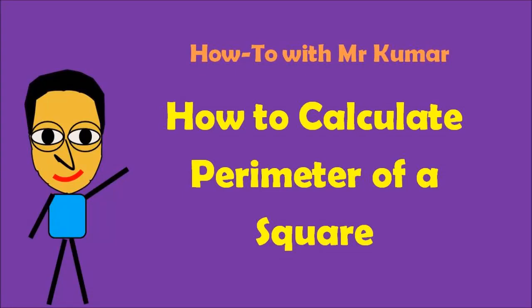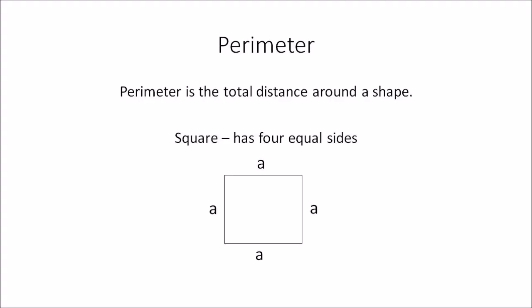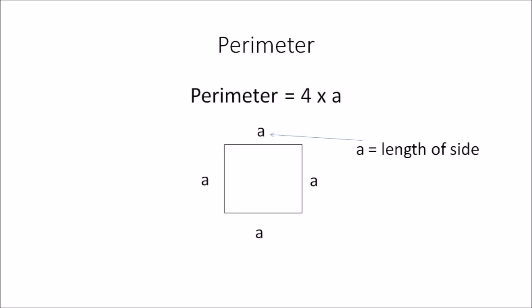Hello everyone. In this video I'll show you how to calculate the perimeter of a square. A perimeter is the total distance around a shape. It's important to note that a square has four equal sides, which is why in the diagram I've labeled each side with the letter 'a' — all side lengths are equal. The formula to calculate the perimeter of a square is 4 multiplied by a, where a is one of the side lengths.